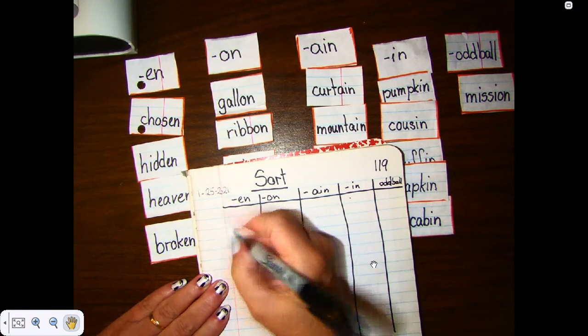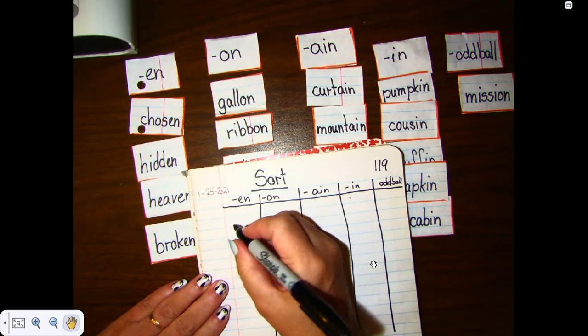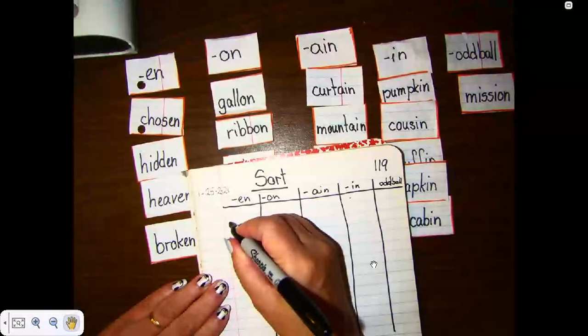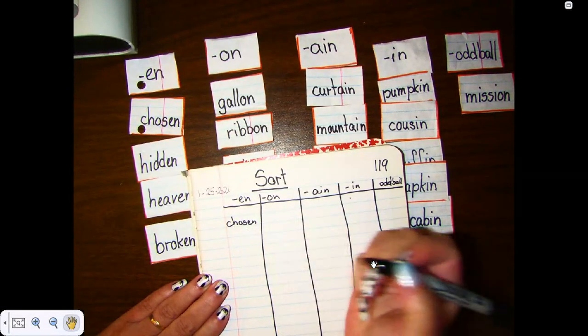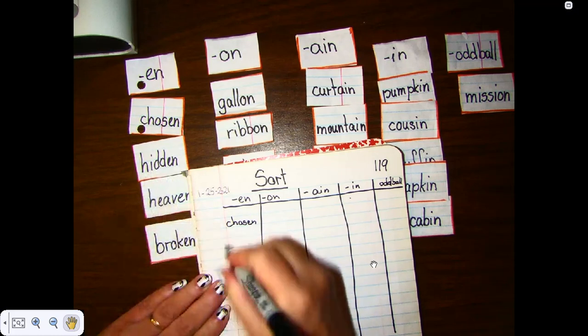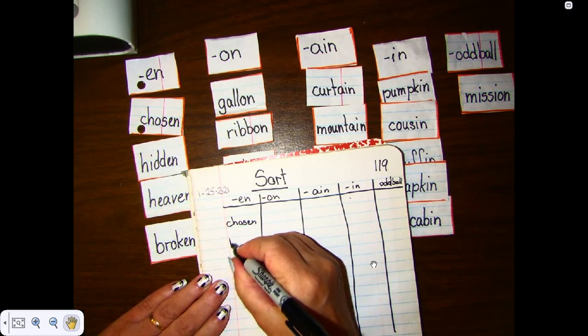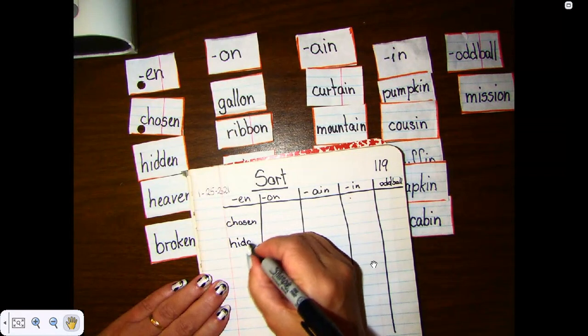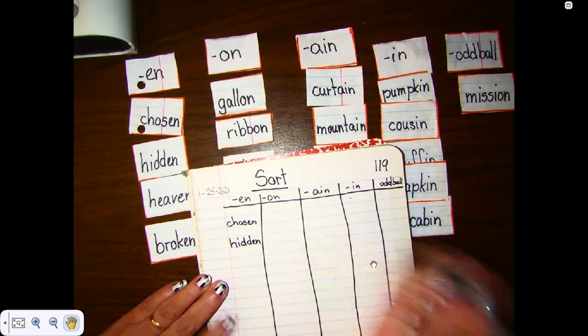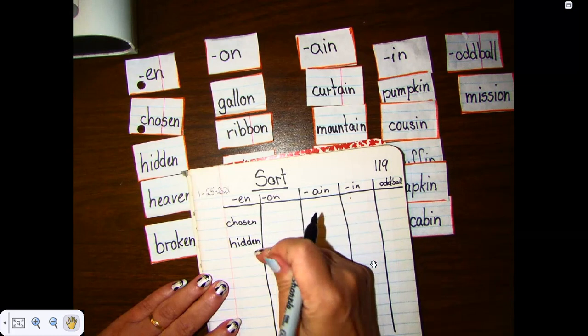So my first word in the E-N column is chosen. My next word is hidden. I'm going to skip a line to give my tall letters and my low-hanging letters space. Hidden. I want you to pause the video here and write the other two words down.